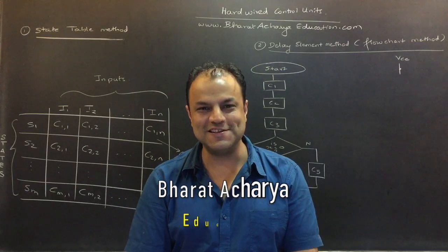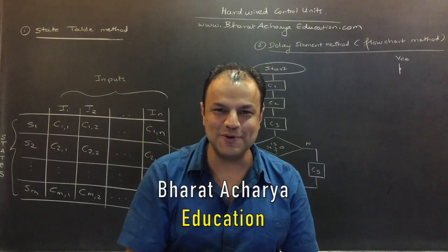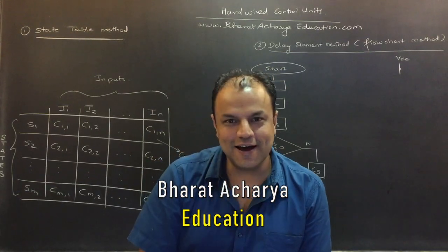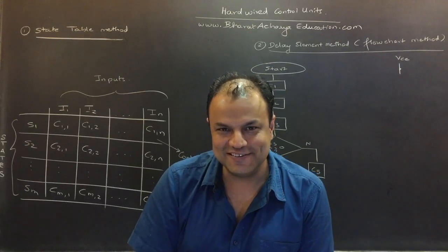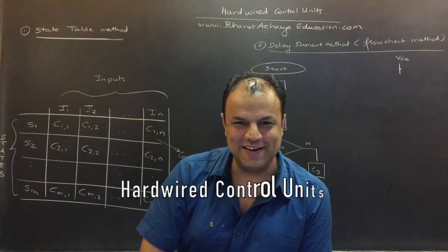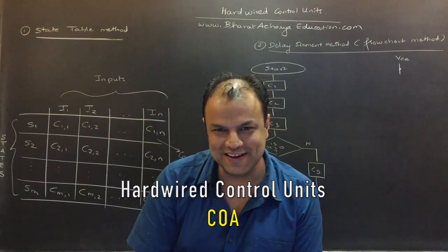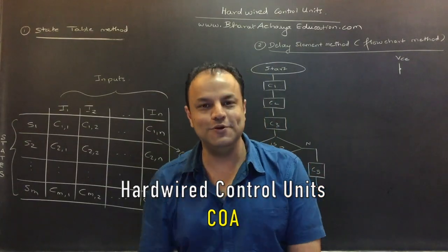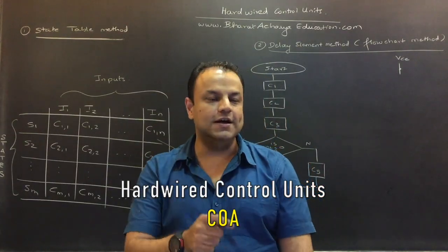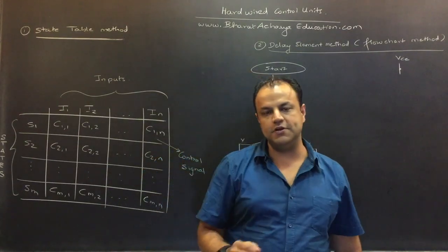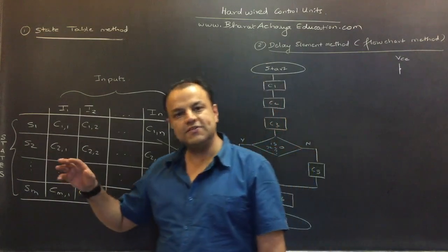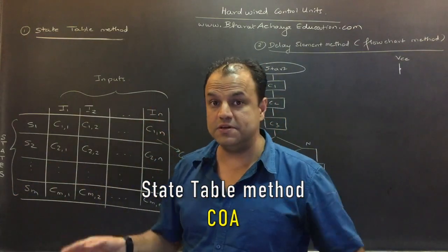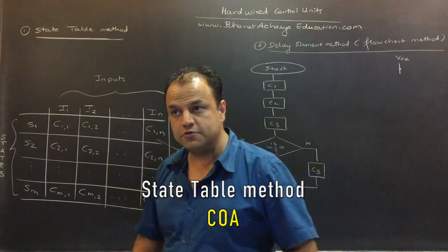Hello people, I'm Bharat Acharya, welcome to a new video. In today's video we're going to learn hardwired control units. If that name scares you, if you've seen that name before but tried to skip that topic, this is a video you want to watch. In hardwired control units there are three types. We start with the most basic one called the state table method — this is the first method by which hardwired control units are made.